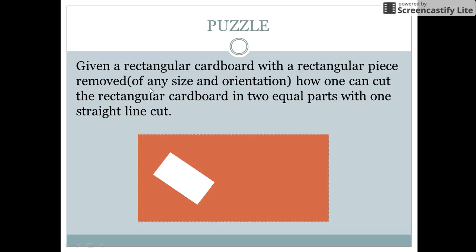The removed piece can be of any size and orientation. So how can you divide this remaining portion of the rectangular board into two equal parts with just one straight line cut?